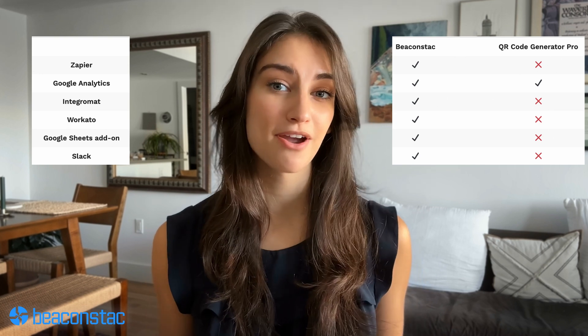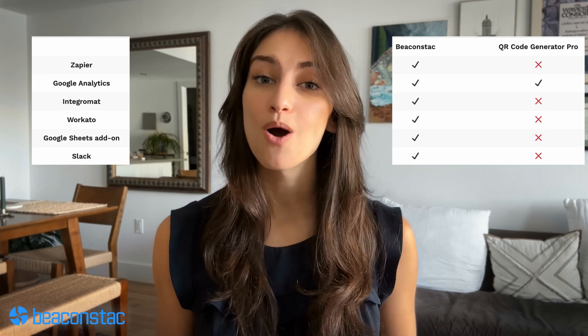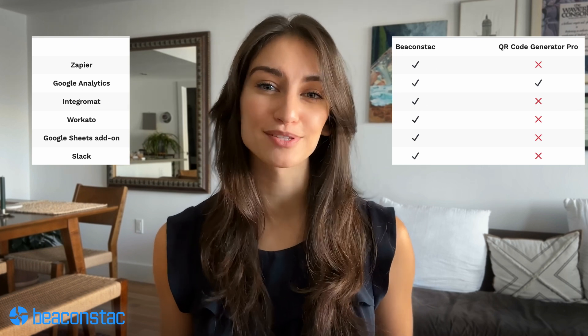Enterprise integrations: when using a QR code generator software, it is critical that the platform allows for integration with other tools to ensure a smooth workflow. Google Analytics integration is available in both Beacon Stack QR code generator and QR code generator pro, allowing you to track scans and understand end user engagement. Beacon Stack can connect to nearly 4,000-plus Zapier supported applications. Beacon Stack also has a Google Sheets plugin for directly creating QR codes in bulk, as well as Slack integration.